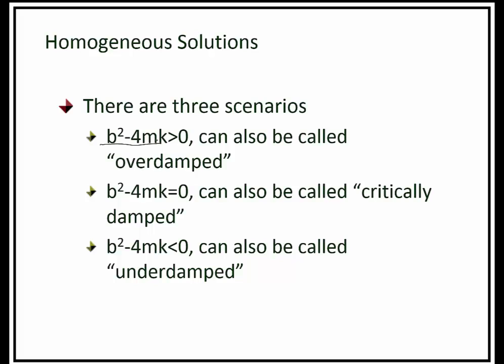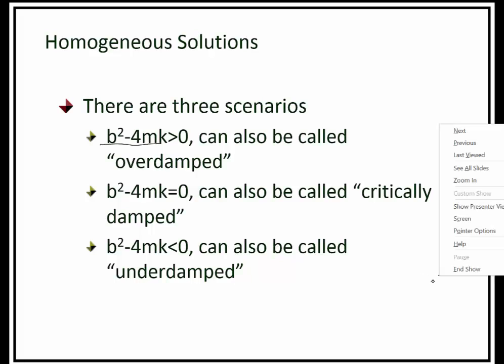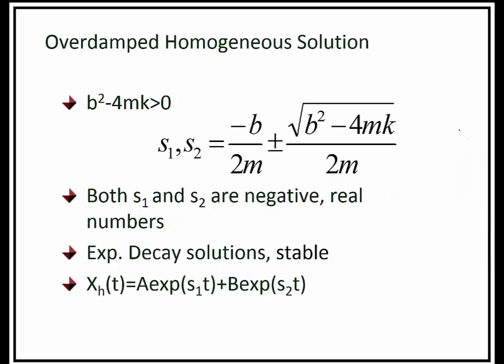If b squared minus 4mk is greater than zero, we call the solution an overdamped solution. In this case, both s1 and s2 — the roots of the characteristic equation — are negative real numbers, resulting in an exponential decaying solution. Since s1 and s2 are both negative, the solution is decaying and the solution is stable.